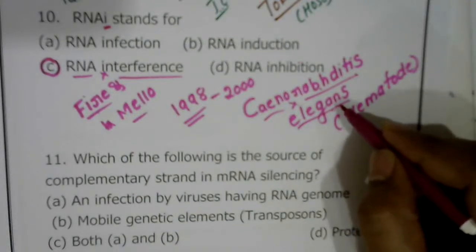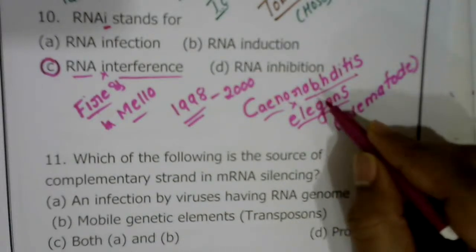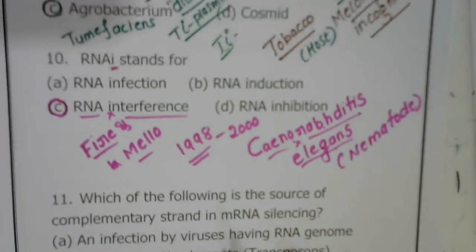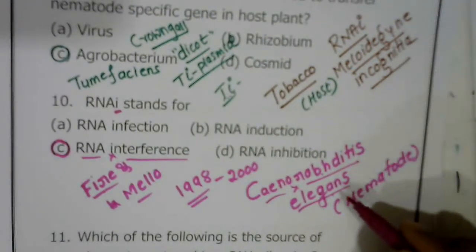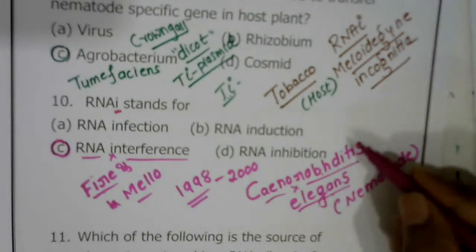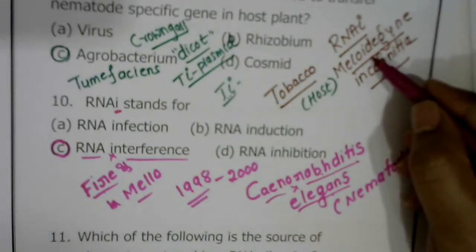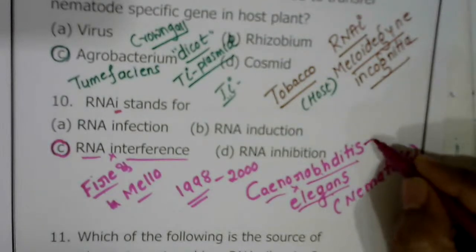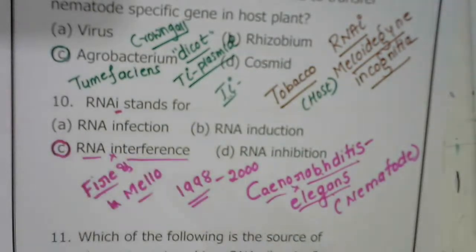Caenorhabditis elegans is also mentioned in the molecular basis of inheritance chapter as an example of a free-living, non-parasitic nematode. Compare this with Meloidogyne incognita, which is also a nematode but is parasitic. Caenorhabditis elegans is free-living and non-parasitic. Question ten's correct answer is C option.